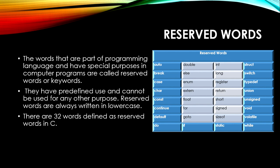Reserve words are words that are part of a programming language and have a special purpose in computer programs. They are also called keywords. They have a predefined use and cannot be used for any other purpose. Reserve words are always written in lowercase. There are 32 defined reserve words in C language, as shown in the diagram.